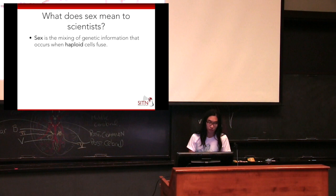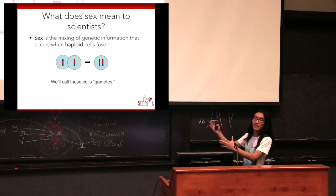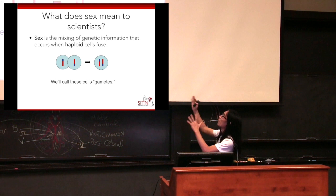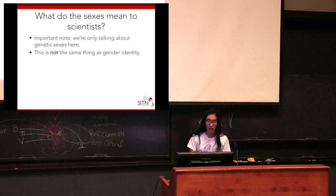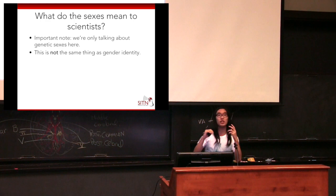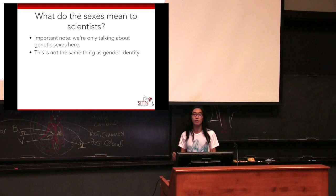Now we can have a more precise definition: sex is the mixing of genetic information that occurs when haploid cells fuse. These haploid cells we'll call gametes. Here's my little cartoon of sex: two cells that love each other very much come together, and you end up with a diploid cell again with the same number of chromosomes as we started with. I need to mention something very important: I'm only going to be talking about genetic sexes here. This is very much not the same thing as gender identity, which is a fascinating topic but not my area of expertise.